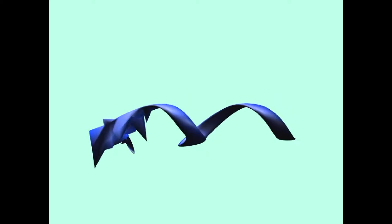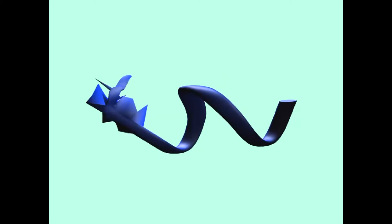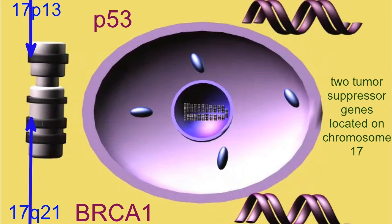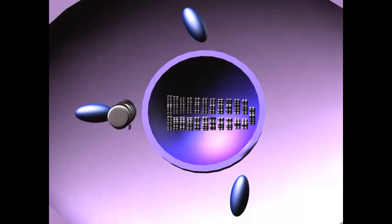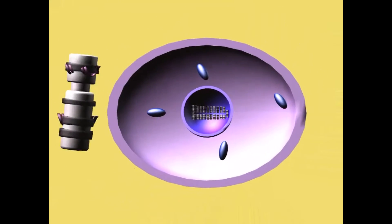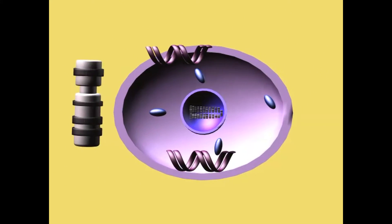The protein p53 is one of the most important tumor suppressor proteins in the human genome, and about half of all human cancers either lack p53 or possess a mutated form of p53.